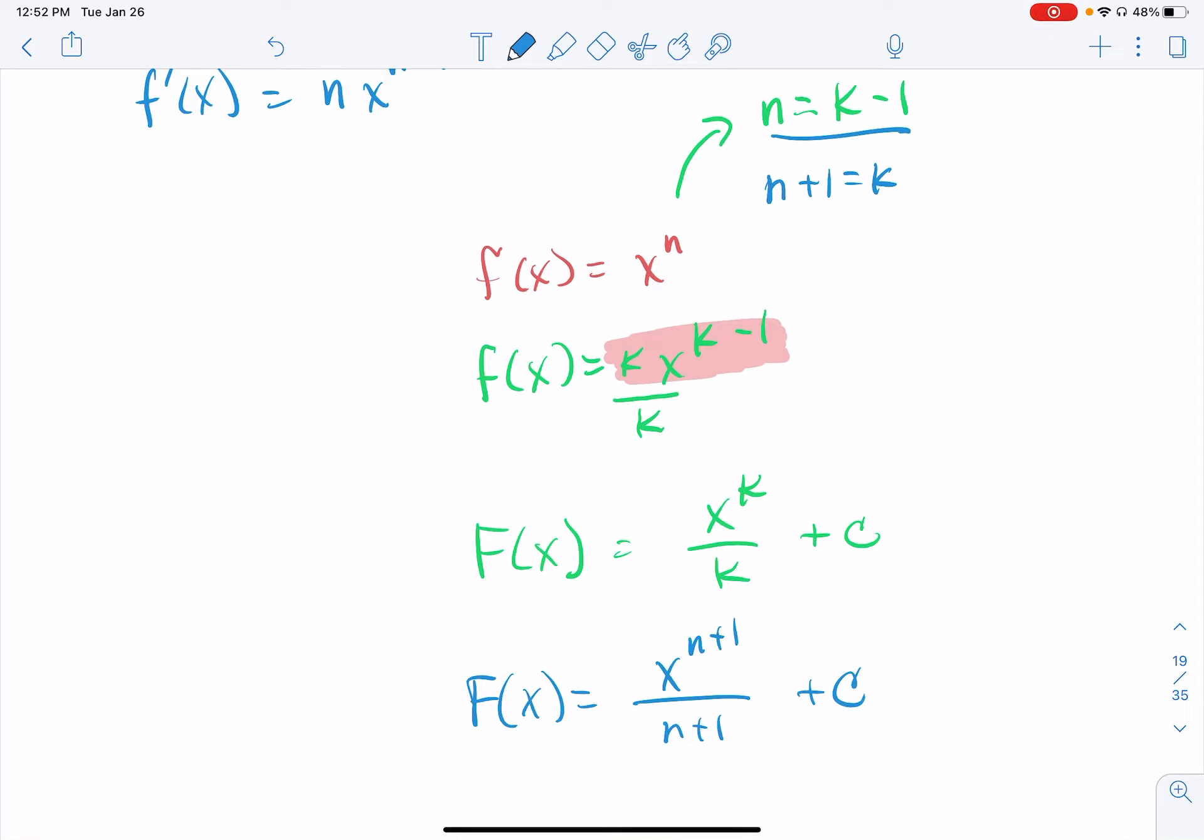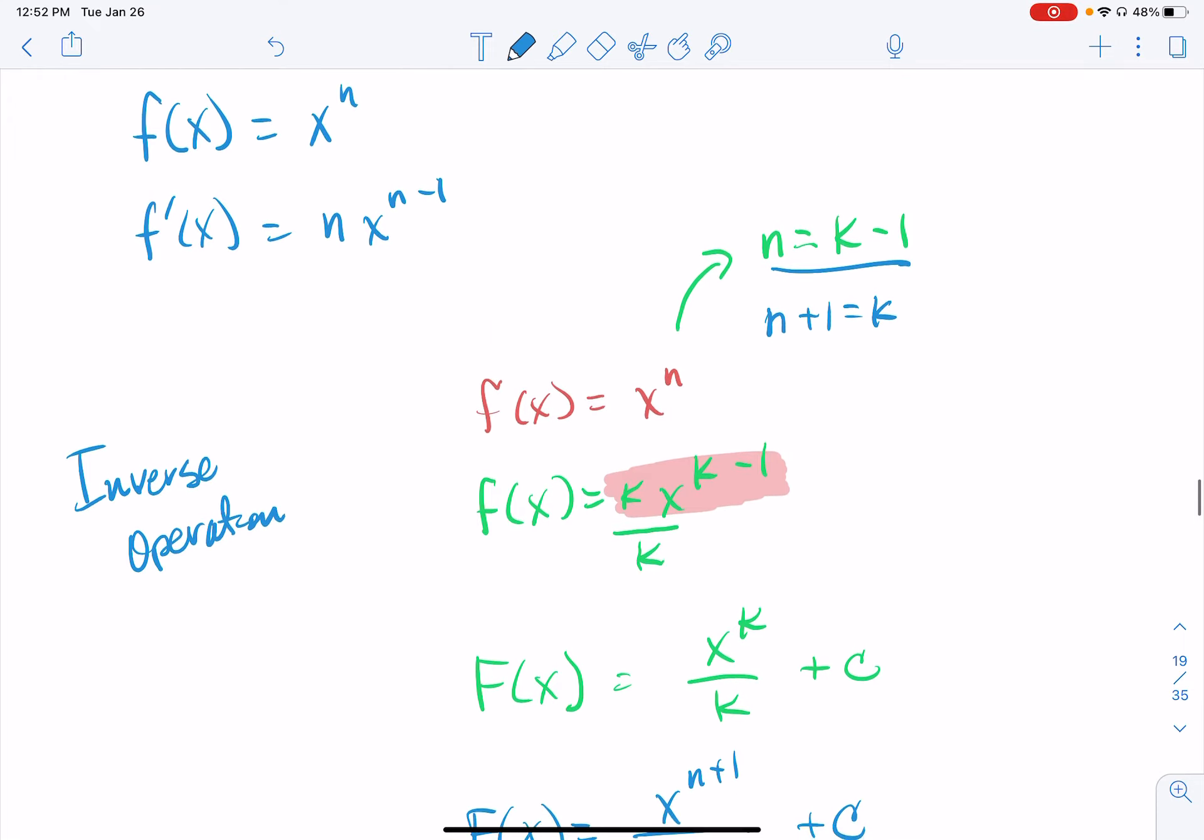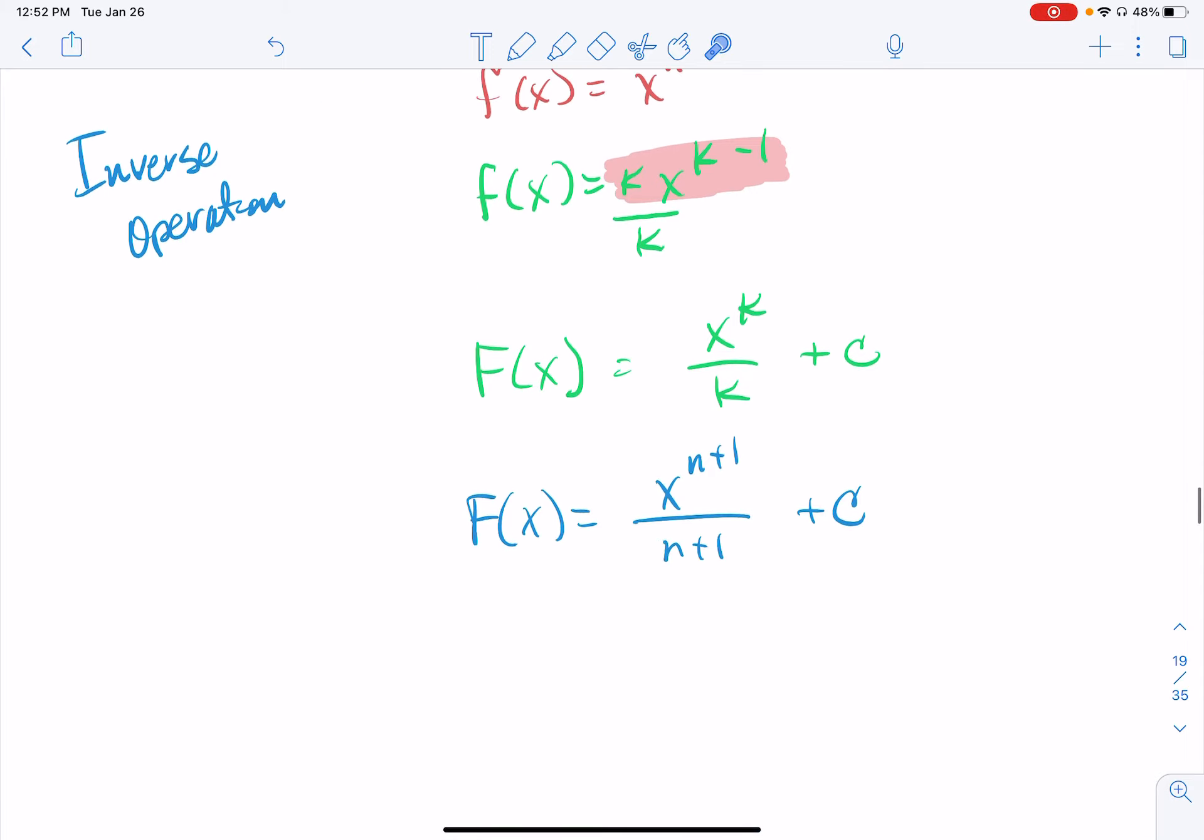Okay. So, again, let's make some connections here. Based, once again, on the inverse property between differentiation and antidifferentiation. So, when I take the derivative here, I subtract 1 from the exponent. When I take the antiderivative, I'm going to add 1 to the exponent.